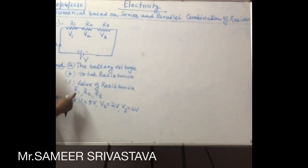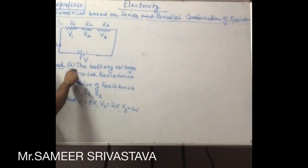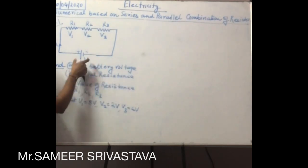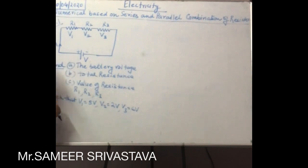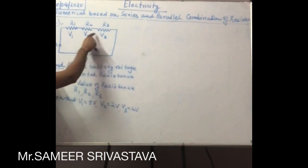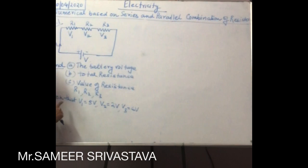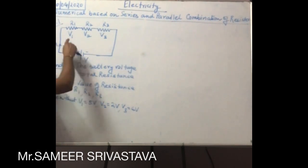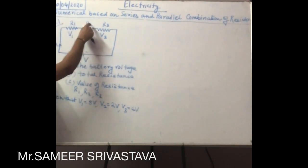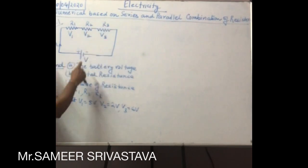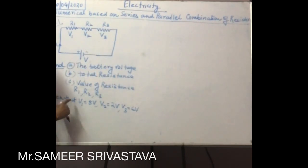Now what we have to find out: section A, the battery voltage. Second, the total resistance — the value of total resistance in this circuit. And as well as the individual resistances R1, R2, and R3. Very simple question.